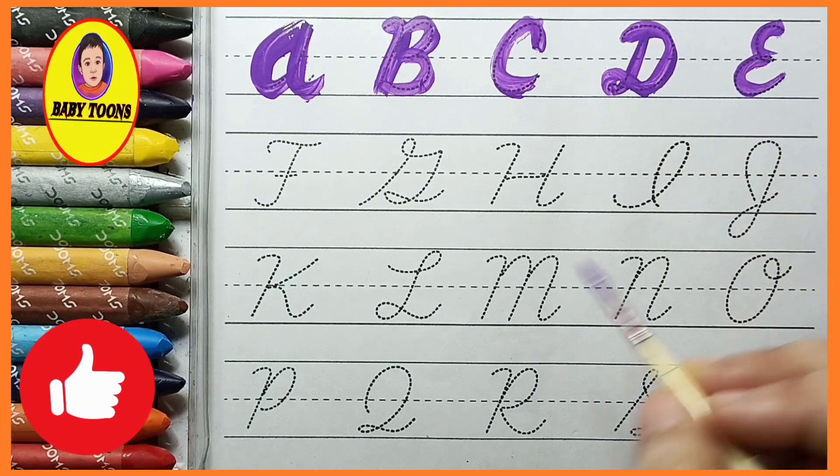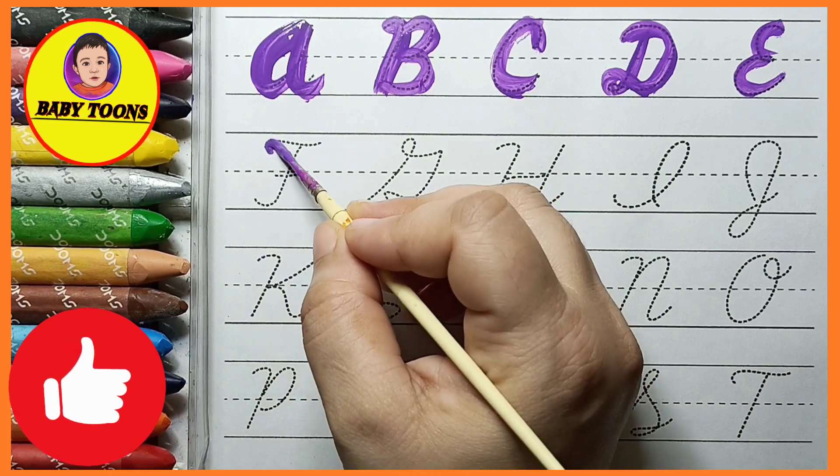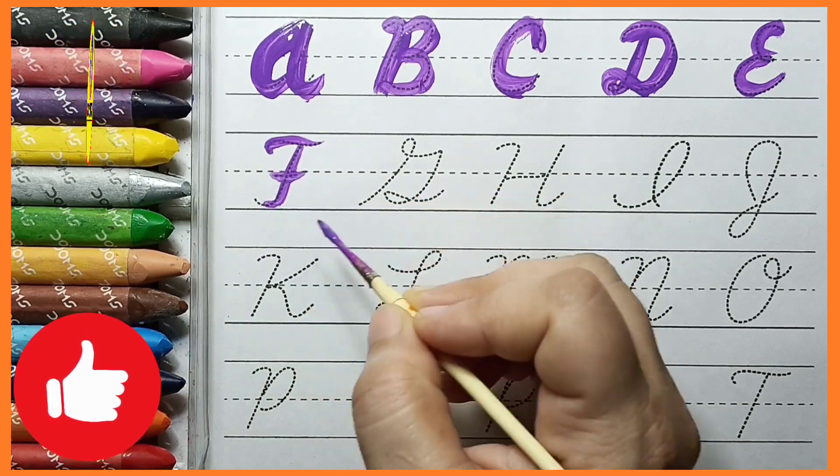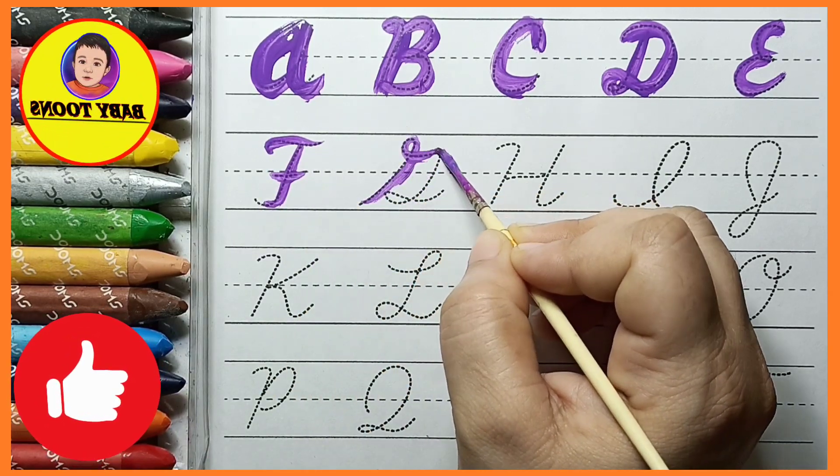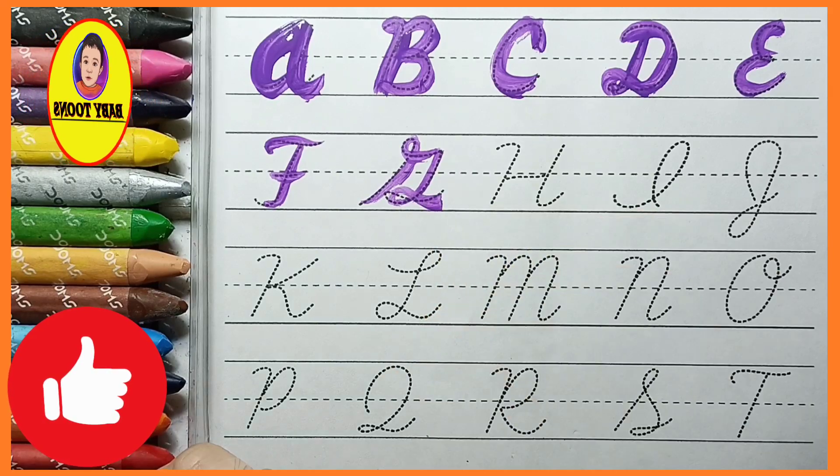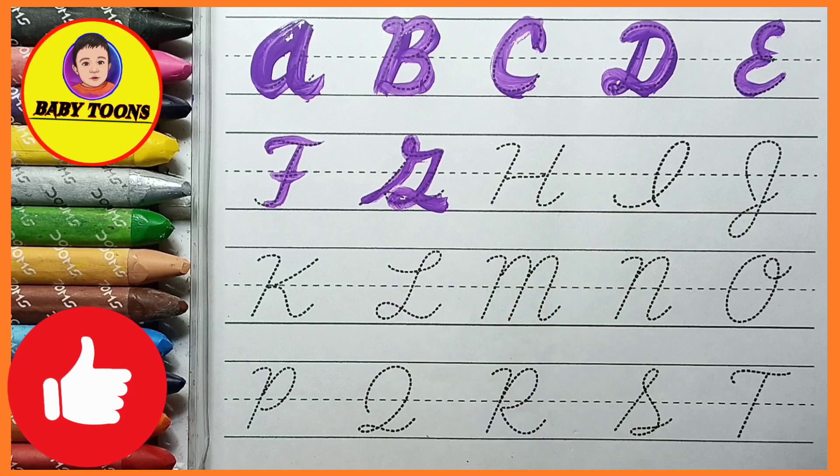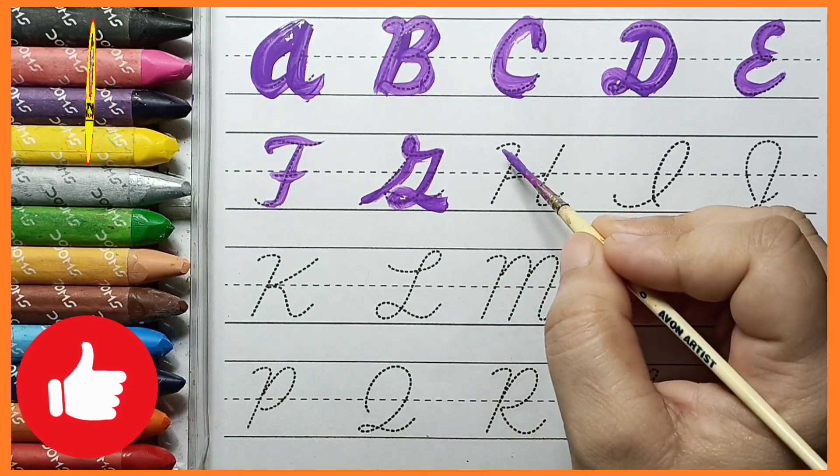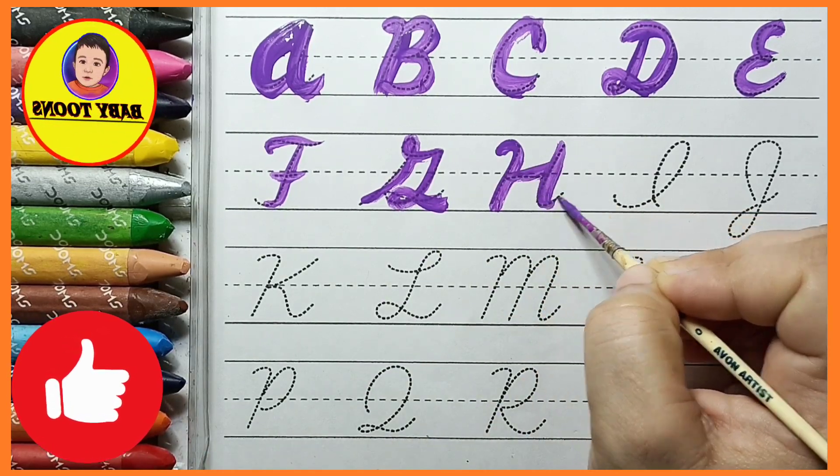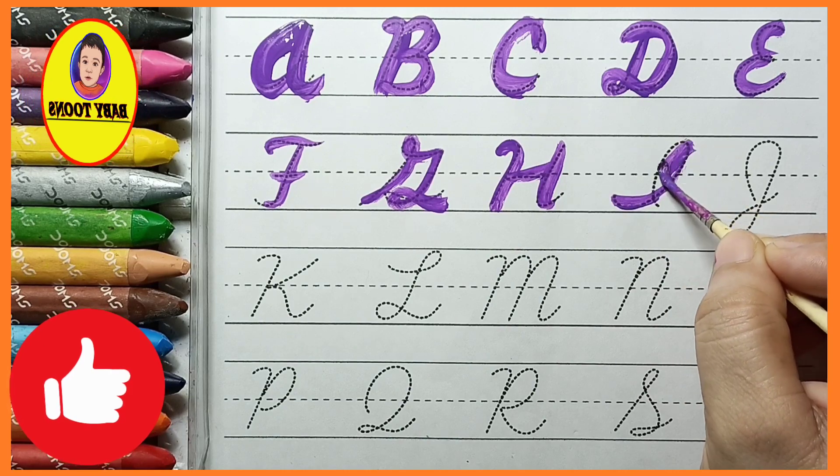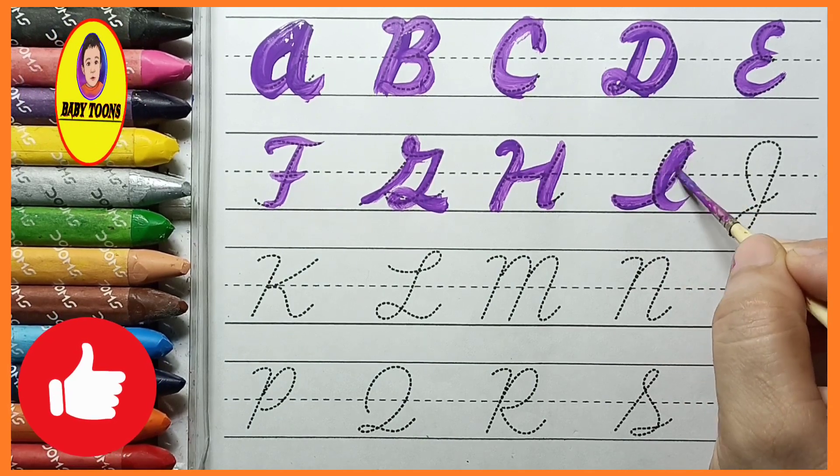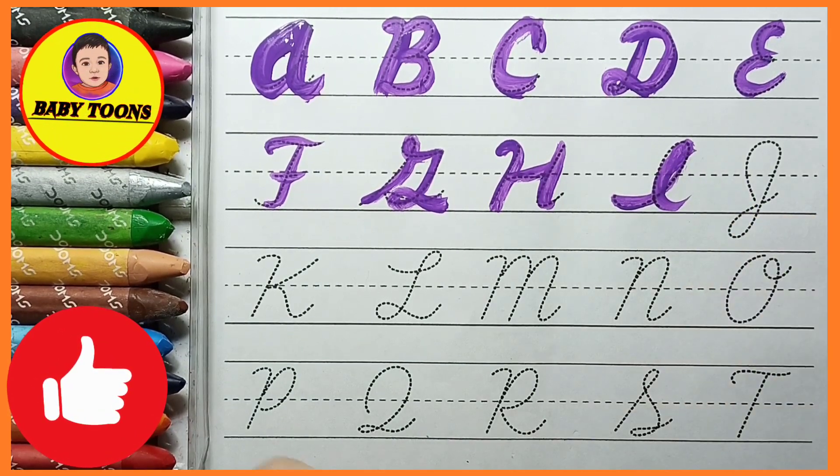E for Elephant, F for Fox, G for Grass, H for Horse.